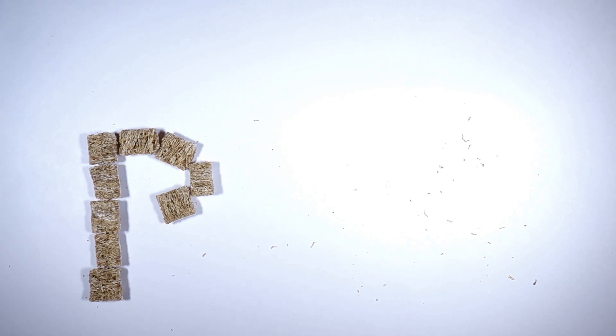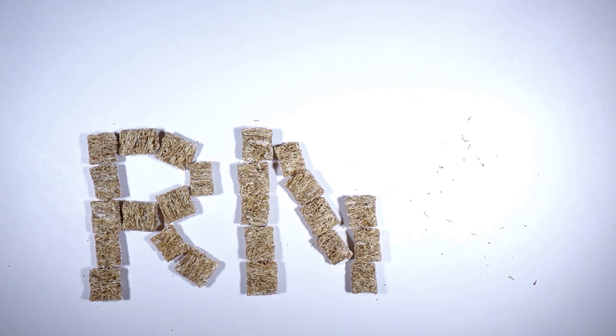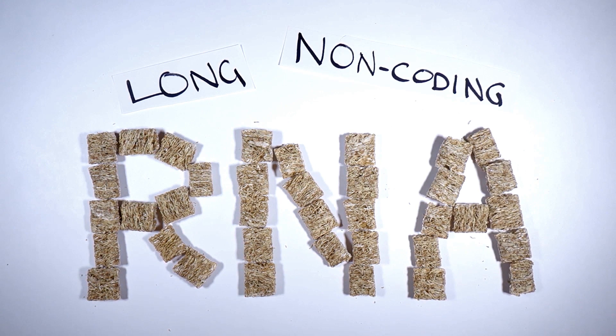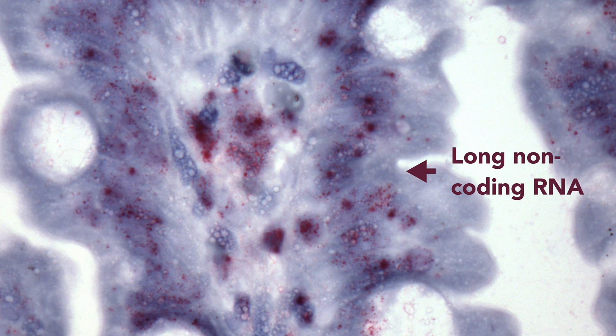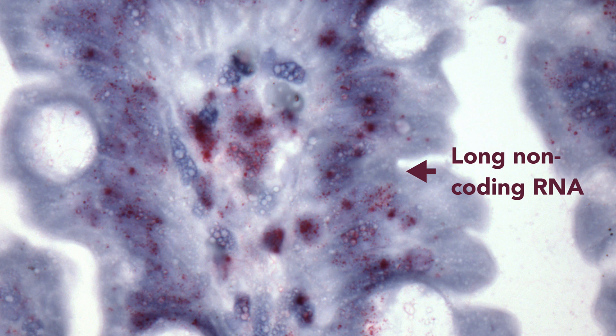These are molecules, RNA molecules, that do not produce protein. We found this long non-coding RNA that appears to represent an important risk gene that contributes to the development of celiac disease.